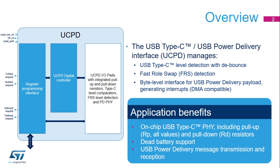Requests to external DMA channels may also be used to automatically transfer protocol messages to or from memory. The block diagram shows the two important parts of the UCPD module. The register interface on the left, clocked by UCPD PCLK, is used by software to configure and determine the current state of the module. Messages are transferred byte by byte by means of the TX and RX registers. The PD physical layer encodes and decodes bytes.